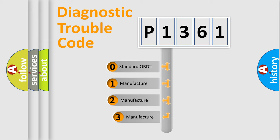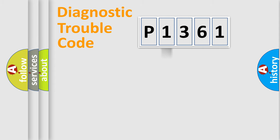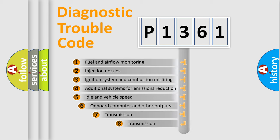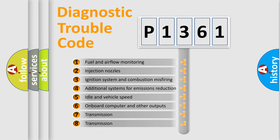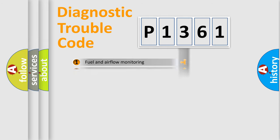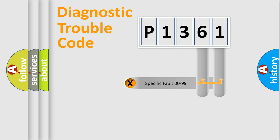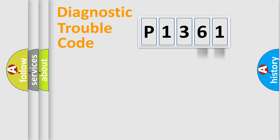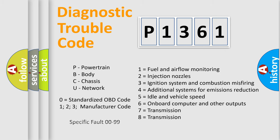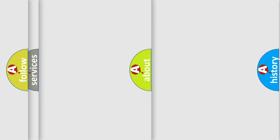If the second character is expressed as zero, it is a standardized error. In the case of numbers 1, 2, or 3, it is a more specific expression of the car-specific error. The third character specifies a subset of errors. This division is valid only for the standardized DTC code, and only the last two characters define the specific fault of the group — but only when the second character is zero.